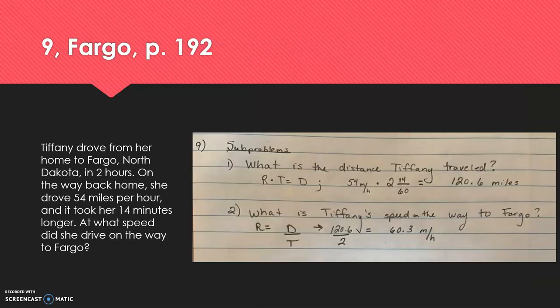The next question is number nine, Fargo. It reads as follows: Tiffany drove from her home to Fargo, North Dakota in two hours. On the way back home, she drove 54 miles per hour, and it took her 14 minutes longer. At what speed did she drive on the way to Fargo?